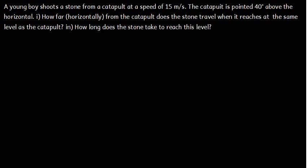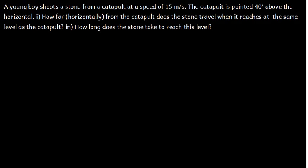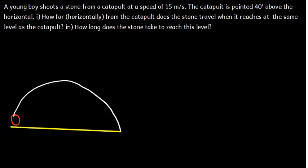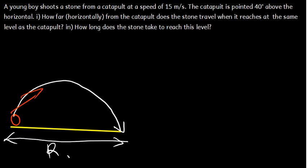First we need to draw a free body diagram. We are starting from level ground — this is the second trajectory. We have the ground, a catapult here, and the stone moves in this direction, going up and coming back down. The horizontal distance traveled is the range, which is what part A is asking. The initial velocity is 15 meters per second, at an angle. At maximum height H_max, the final velocity in the y-direction is 0.